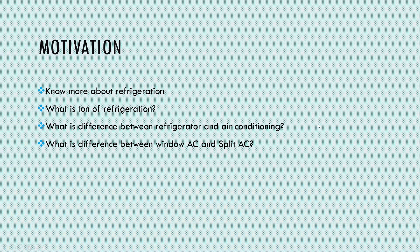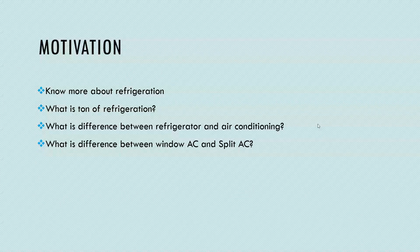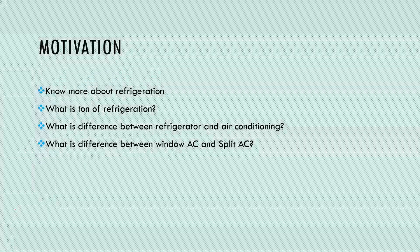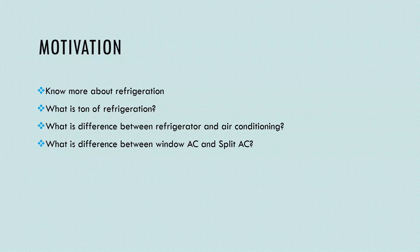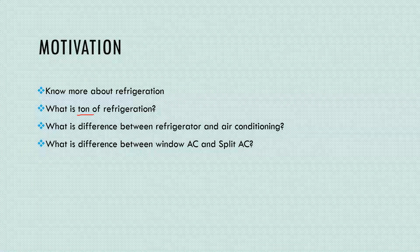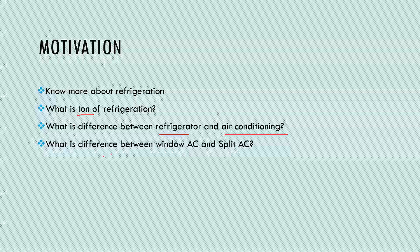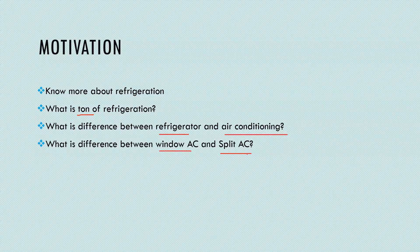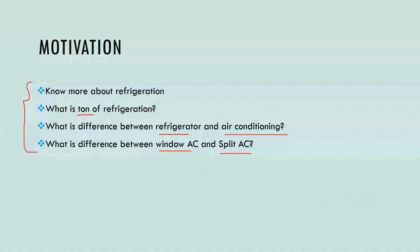In this particular chapter, let us talk about the motivation. At the end of this chapter, you will know more about refrigeration. You have already heard about the ton of refrigeration — for example, when you go to a shop and think about the capacity of an air conditioner in terms of the ton. We will discuss what is meant by ton of refrigeration. You will also know the difference between the refrigerator and air conditioning, and the difference between window AC and split AC. Window AC was booming initially, but nowadays window ACs are completely replaced by the split air conditioning unit.